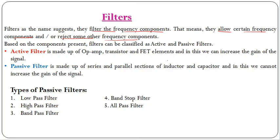Filters are of two types: first is active filter and second is passive filter, depending on the components present. Active filters consist of active elements like op-amp, transistor, and field effect transistor along with passive elements, and because of these active elements they provide gain to the signal. Passive filters consist of only passive elements like resistors and capacitors and do not provide any gain.